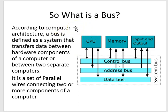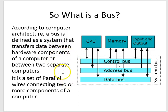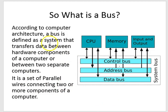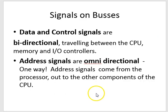According to computer architecture — and not Transport for London — a bus is defined as a system that transfers data between hardware components, such as the CPU, memory, and input/output, between the hardware components of a computer or between two separate computers. It is a set of parallel wires connecting two or more components of a computer. Those are two good definitions to write down.